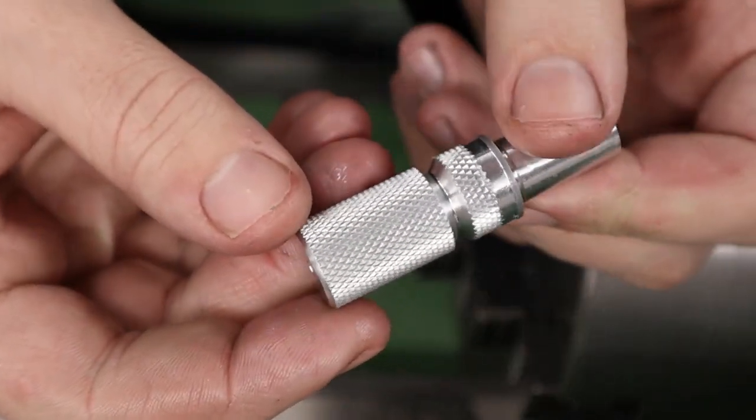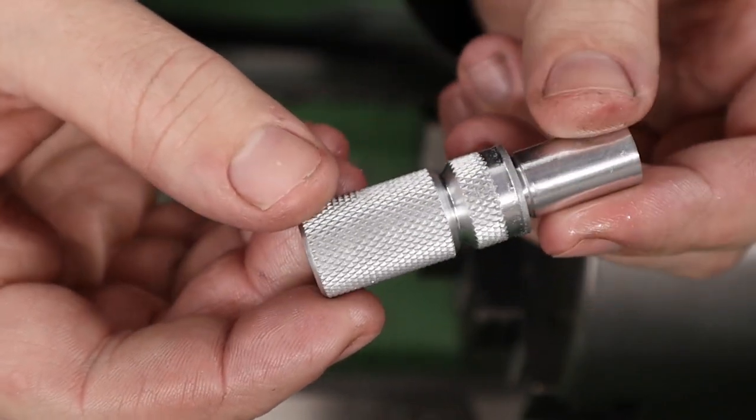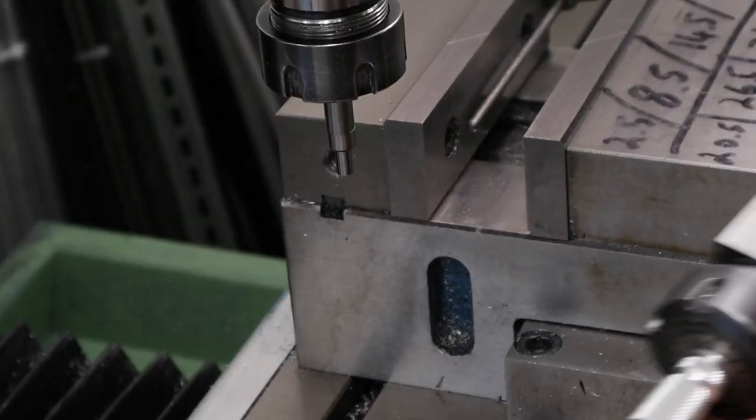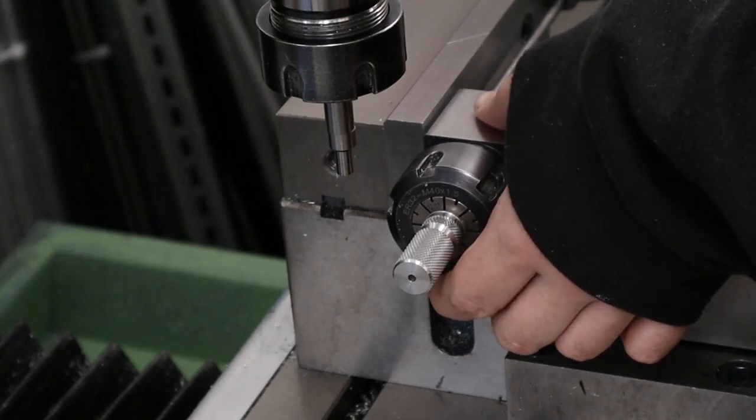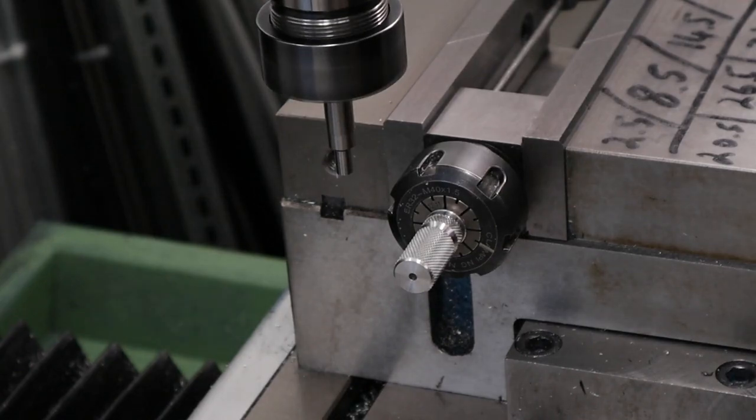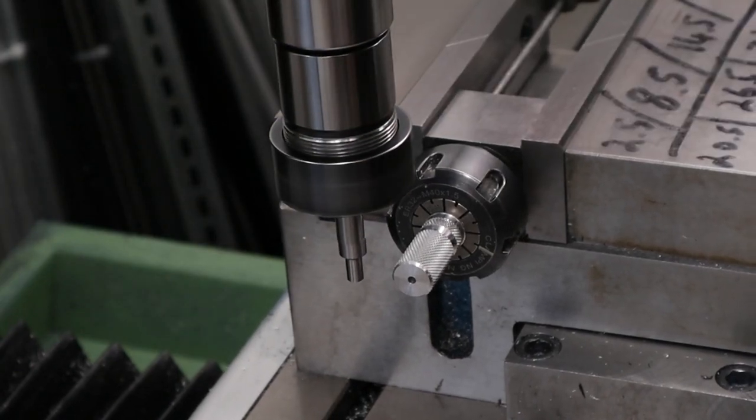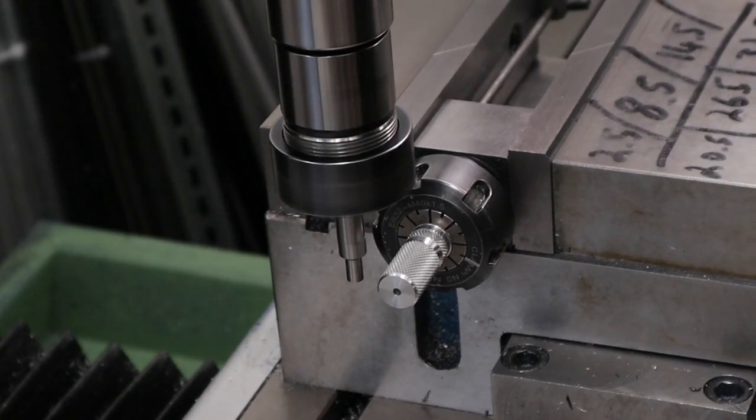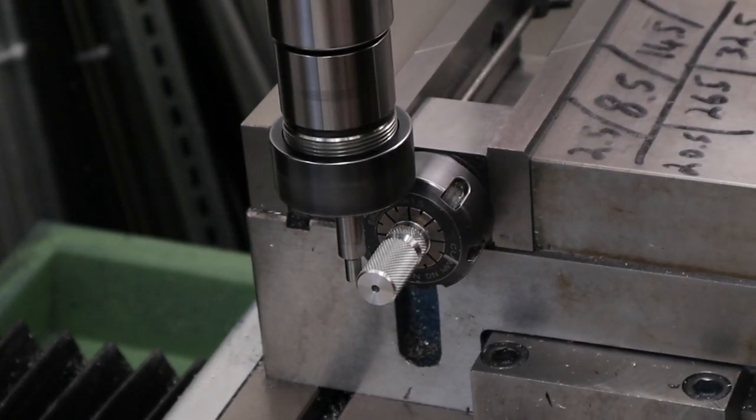To finish the knurl off we're coming through with some green scotch brite just to take the sharp edges off. Next we can move the part over to the vice and as you can see we've got it set up in the four-sided collet block as well as having a vice stop set up in the back. This will allow us to retain our X position as we take the piece in and out of the vice.